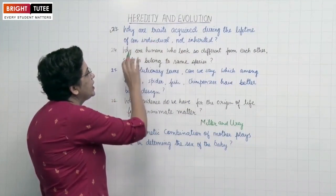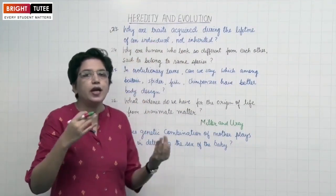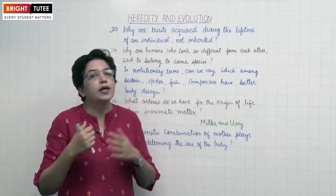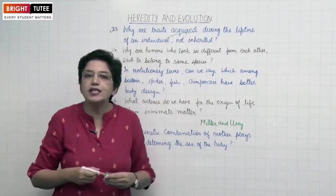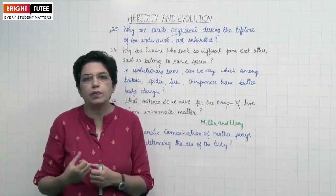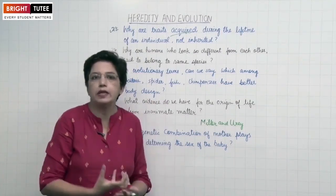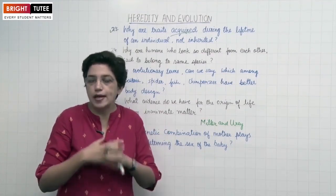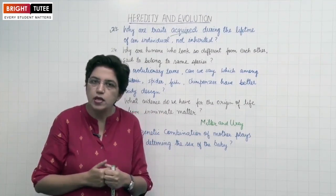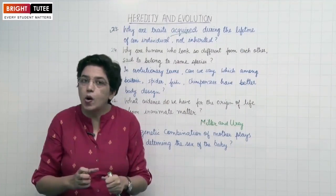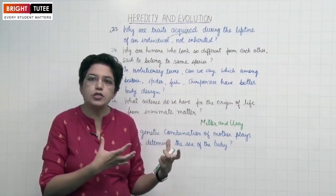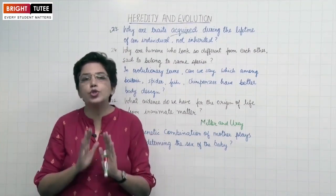Why are traits acquired during the lifetime of an individual not inherited? There are two kinds of traits: inherited traits which we get from our parents during reproduction, and acquired traits which we acquire during our lifetime — these are structural, functional, or behavioral traits developed due to disease, trauma, or learning. For example, if you become a good dancer through training, that is an acquired trait, while skin color or height are inherited traits. Acquired traits are not inherited because they do not cause any change in DNA — they are just structural changes in muscles, not in the DNA.